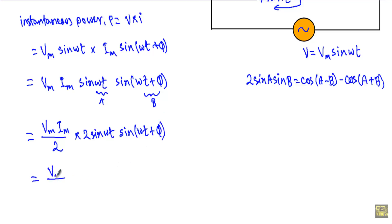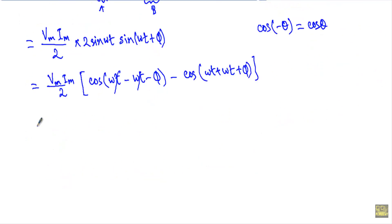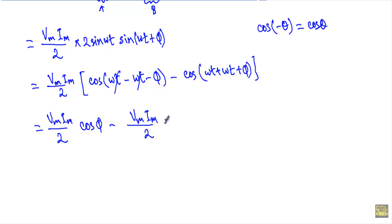Applying the identity, we get Vm·Im/2 times [cos(ωt − (ωt + phi)) minus cos(ωt + (ωt + phi))]. The ωt terms cancel in the first part giving cos(−phi), and since cos(−phi) equals cos(phi), we get Vm·Im/2·cos(phi) minus Vm·Im/2·cos(2ωt + phi). This is the instantaneous power equation — let's call this equation number one.